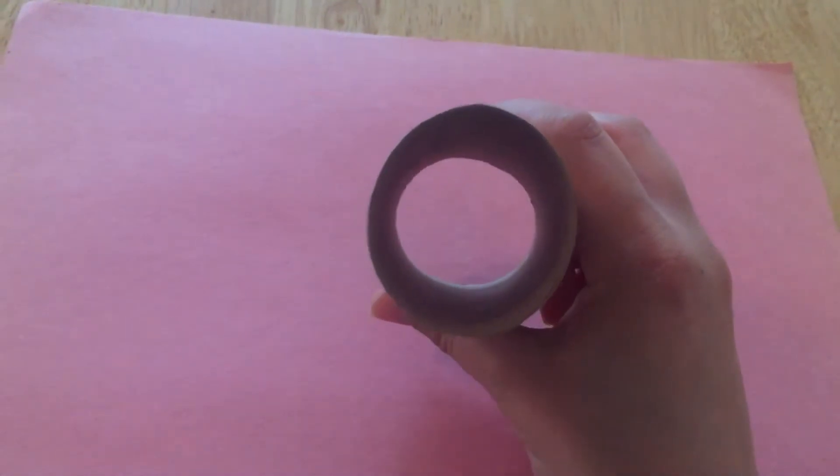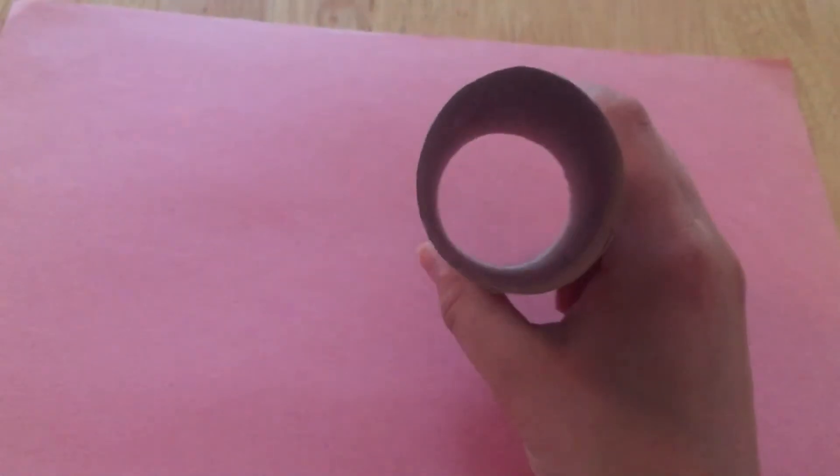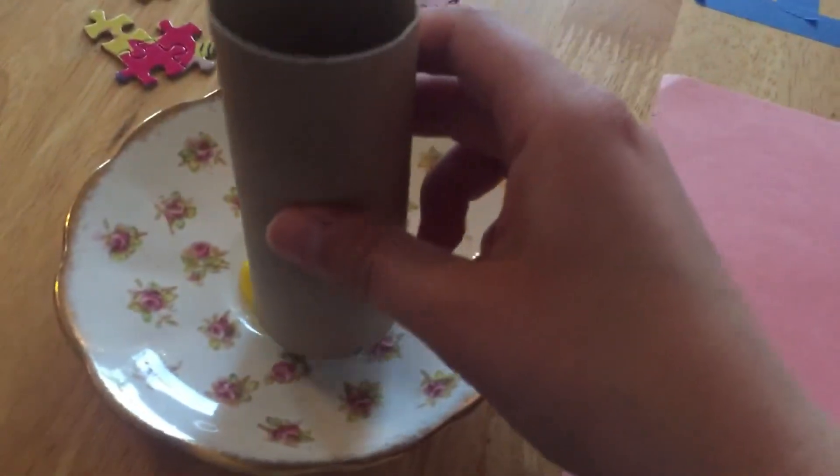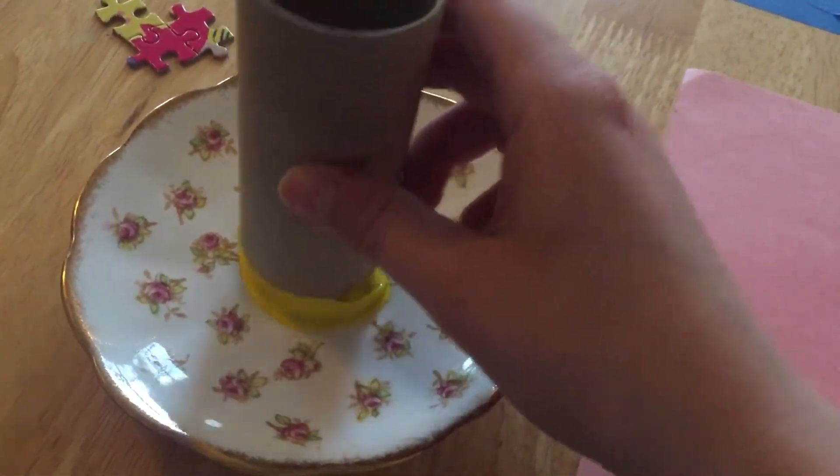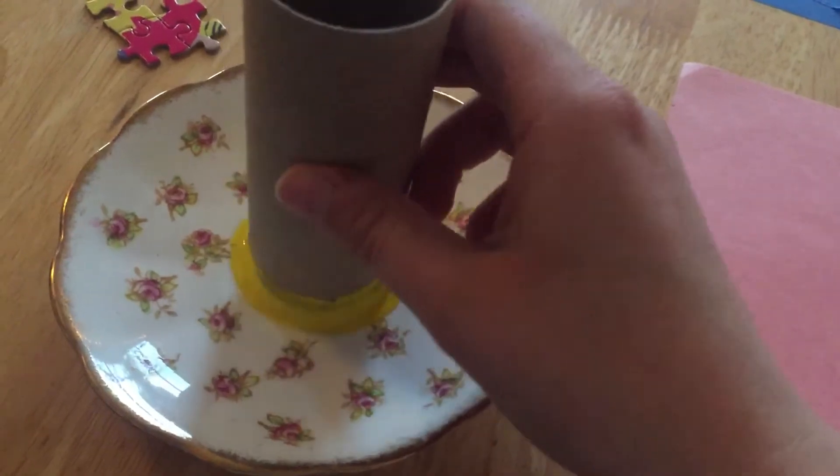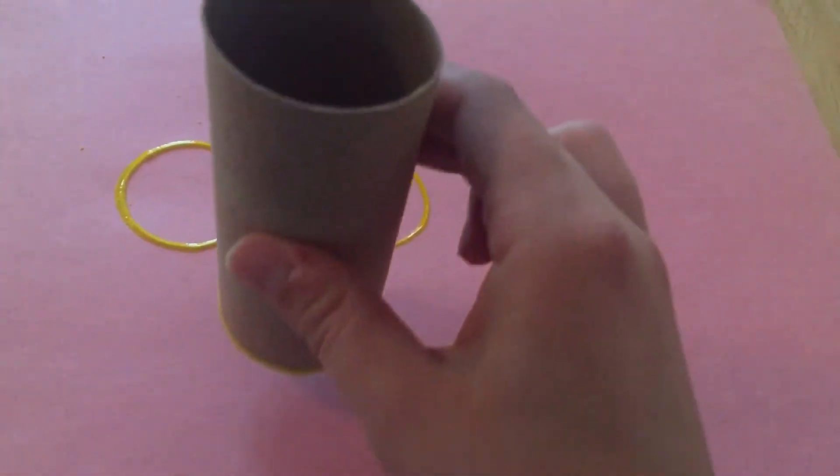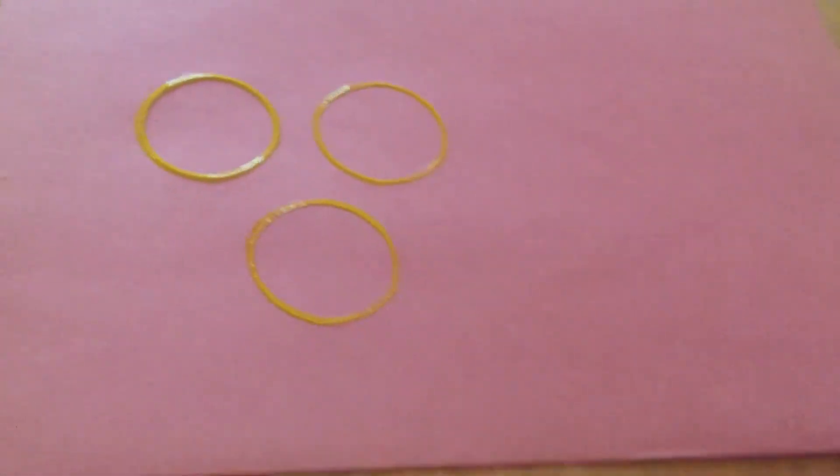It's a circle, okay? So if we just dip the toilet paper tube in our paint and then put it on our paper like this, it makes some really nice circles, right?